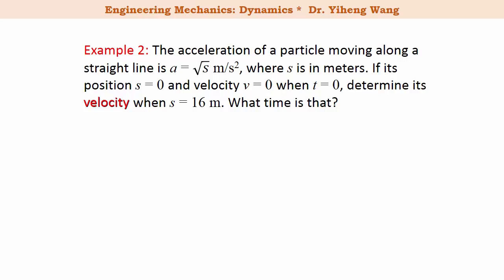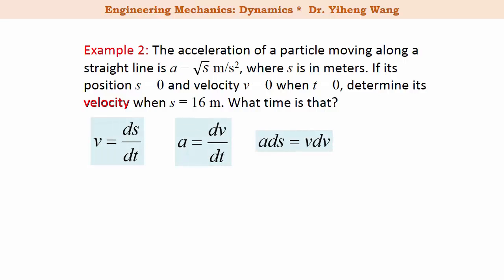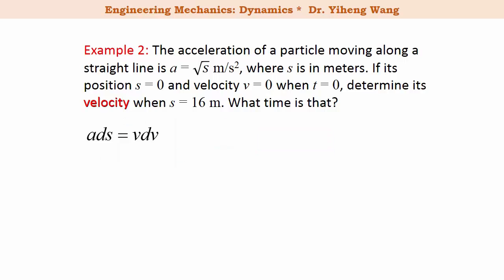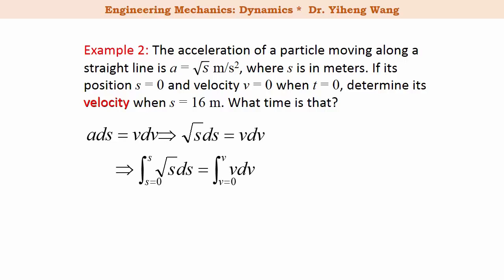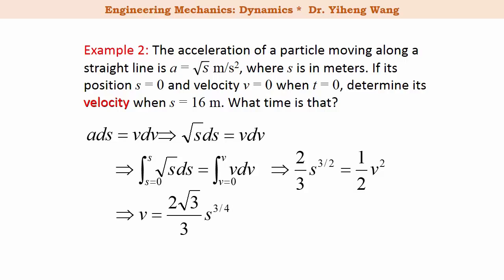In this first part, we know acceleration and position and need to find velocity. Looking at the three kinematic equations, the third one has a, s, and v — all the variables of interest. We start with that equation, substitute a with the position function, and integrate both sides. Pay attention to the lower integration limits from the initial conditions. After integration and rearrangement, we get velocity as a function of position, and at s equals 16 meters, velocity is 9.24 meters per second.